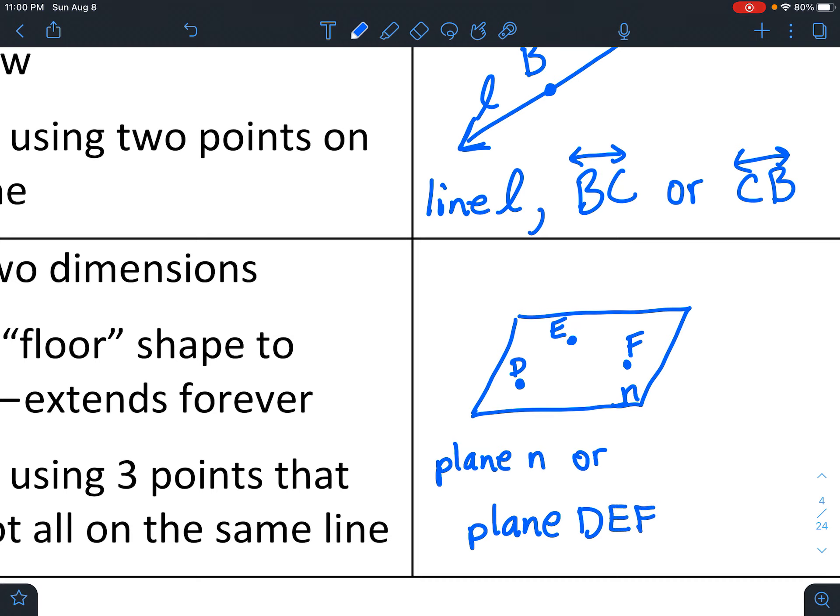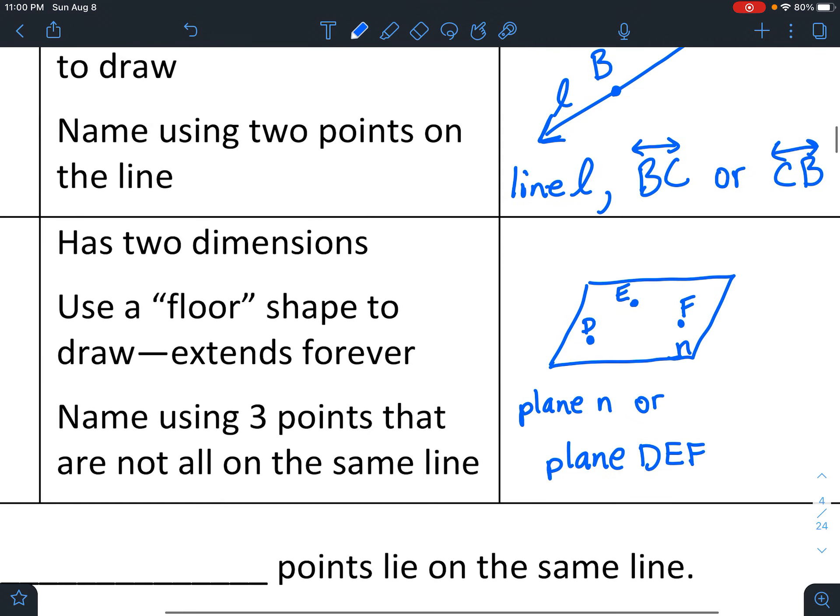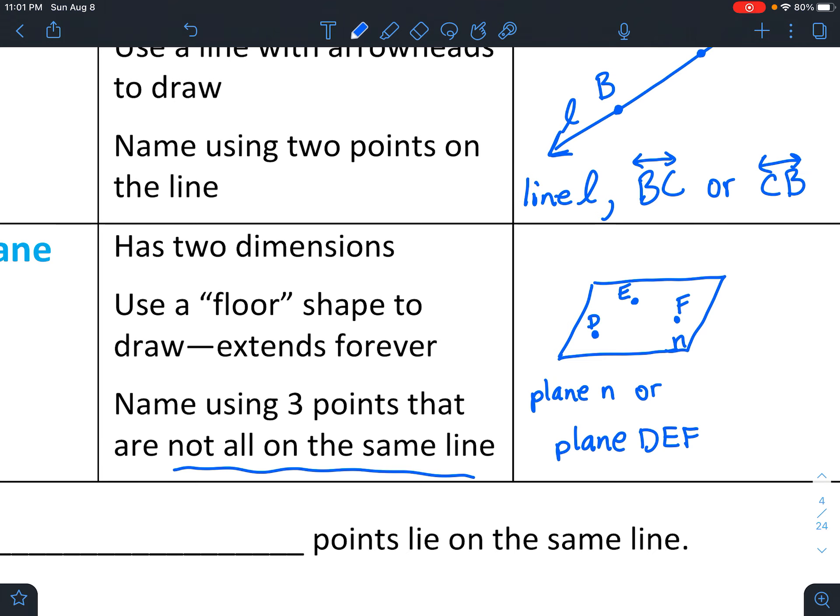You might say plane E, F, D or plane F, E, D. It doesn't matter as long as the three points. And there is one important thing. They're not all on the same line. So if, for some reason, there are three points all in a line, you couldn't use those to define the plane because it's almost like the plane could turn a little bit. So you have to make sure the three points are not straight in a line.